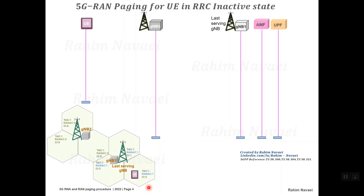Paging for 5G NR is performed when the UE is in either RRC idle or RRC inactive state. In this example I'm focusing on the RAN paging procedure when UE is RRC inactive. Here the UE is in cell 2 of gNB1. The UE has already conducted the service request, so there is an RRC connection between UE and gNB1, a NAS signaling connection between UE and AMF, and a PDU session between UE and the UPF. From the 5G core point of view the UE is CM connected, and from the RRC point of view the UE is RRC connected.